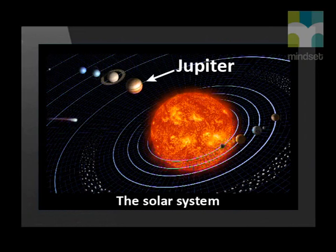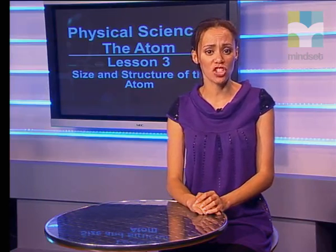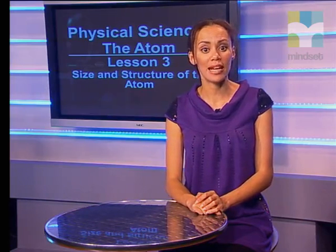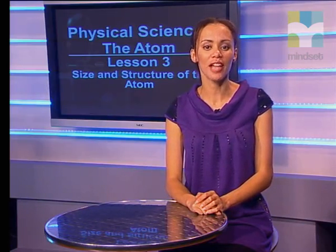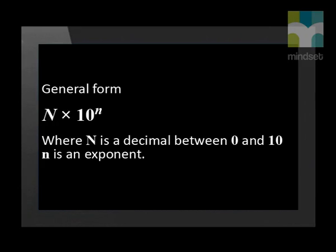Here we see the planet Jupiter in orbit around the Sun. In science, we often work with very large numbers such as the distance of planets from the Sun, or very small numbers such as the diameter of an atom. These numbers can often be written more easily in scientific notation. In scientific notation, the general form is written as n times 10 to the power n — so we have both a decimal number between 0 and 10 and an exponent.